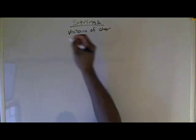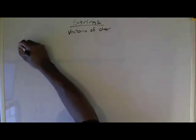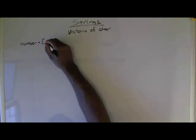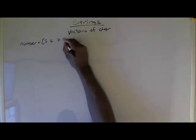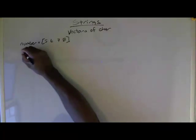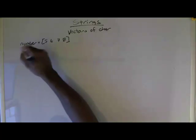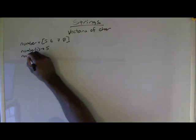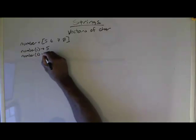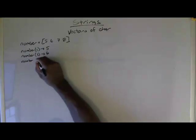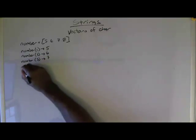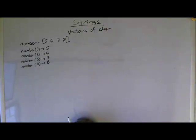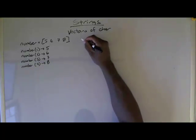Let's do some examples. If I have a vector we'll call number, and we have the vector 5, 6, 7, 8. If we try to evaluate number at index 1, that's the number 5. Number at index 2 is the number 6. Number at index 3 is the number 7, and number at index 4 is the number 8.